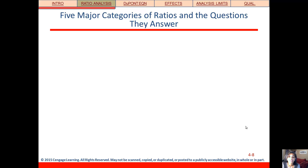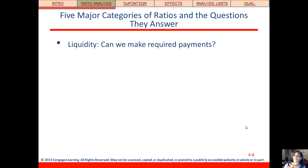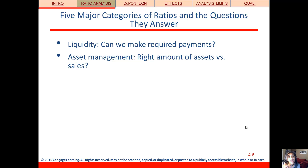We'll take these ratios and divide them into five major categories. As we go through each category, think about the main question that category helps us answer. The first category is liquidity — does the company have enough cash to pay their bills on time when they come due? Second is asset management — do they have the right amount of assets versus their sales? You don't want them to have too much equipment sitting around idle.